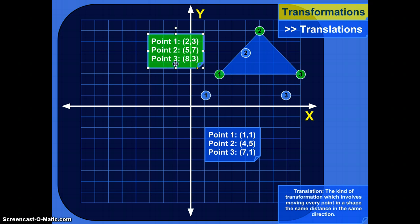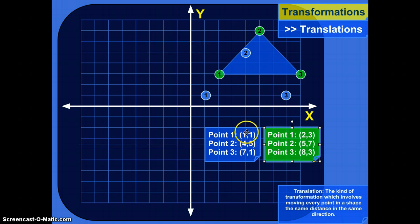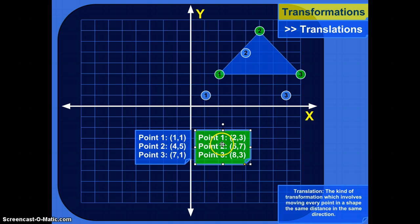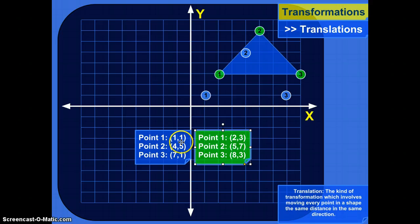So let's see what happened to each one of these points. For point 1, x went from 1 to 2 — it shifted over 1. Point 2 went from 4 to 5 — shifted over 1 as well. Point 3 went from 7 to 8 — shifted over 1. So all the x-coordinates moved 1 to the right. Looking at the y-coordinates: point 1 went from 1 to 3, increased by 2. Point 2 went from 5 to 7, increased by 2. Point 3 went from 1 to 3, increased by 2. So all the x's increased by 1 and all the y's increased by 2.